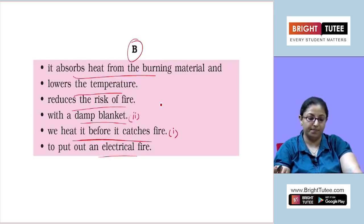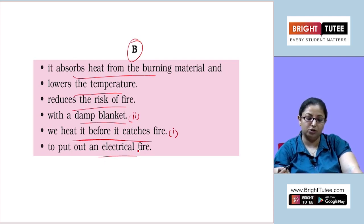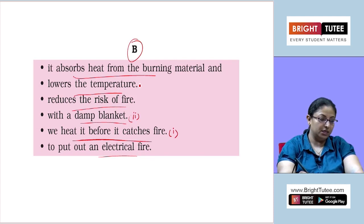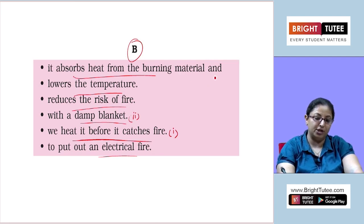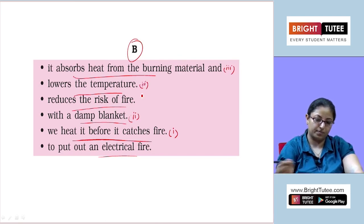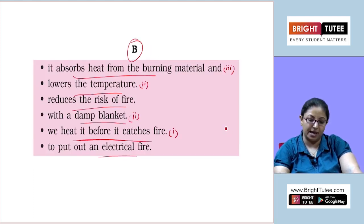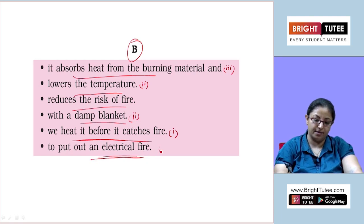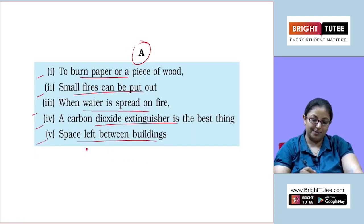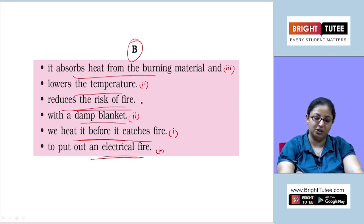When water is spread on fire, it absorbs heat from the burning material and lowers the temperature. A carbon dioxide extinguisher is the best thing to put out an electrical fire. Space left between buildings reduces the risk of fire.